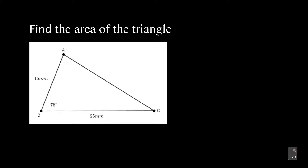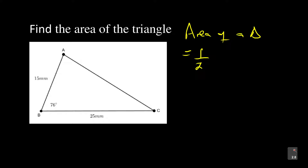Let's go quickly to this section — it's going to be short. I'm looking at examples for calculating the area of a triangle. The formula we use is: area of a triangle is equal to half AB sine C. Let me use half AB sine C — I'll verify that. Just to recap: